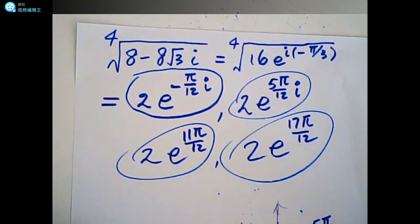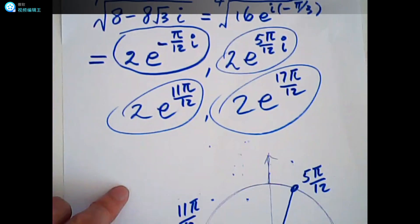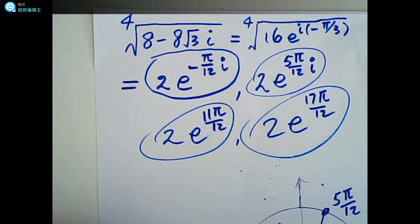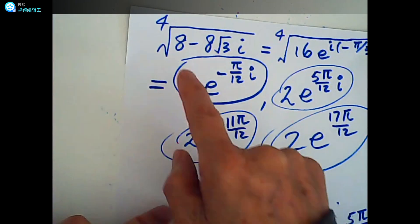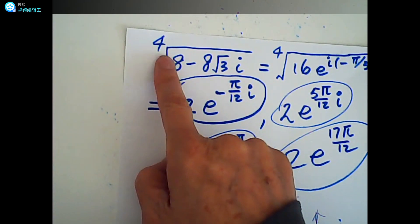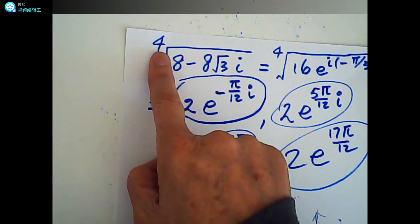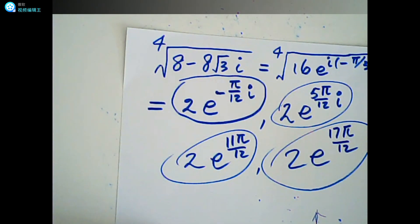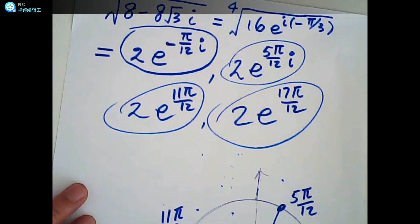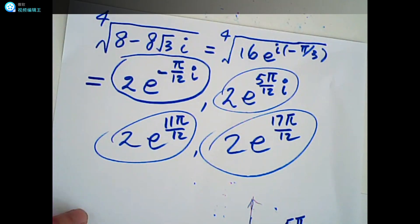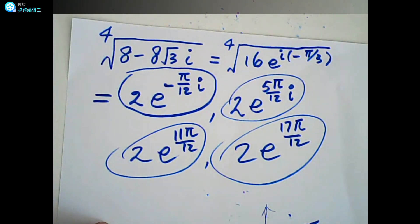This is my general way to find roots for a complex number: first find one root, then from the circle find the others. How many roots you have depends on the nth root — for an nth root, you have n roots. This is the general way to find complex roots. Thank you for watching.